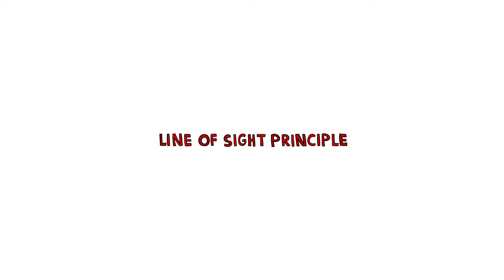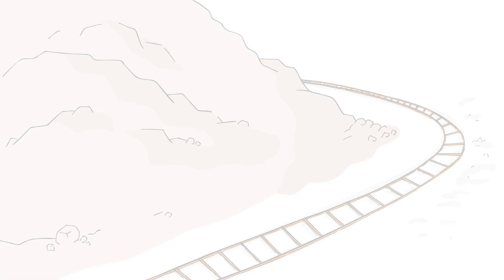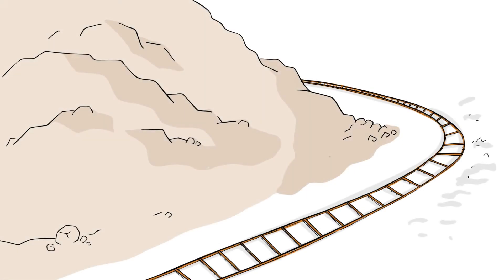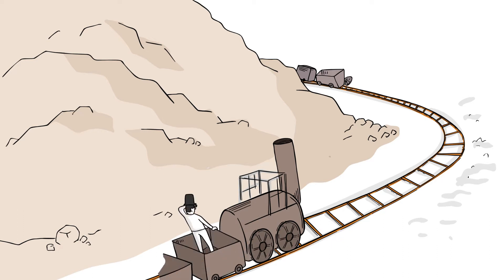The most obvious method to regulate trains was the line of sight principle. In this method, there was no signaling mechanism informing the driver of the state of the line ahead. Instead, trains were driven on line of sight, a rudimentary approach to maintain separation between trains.